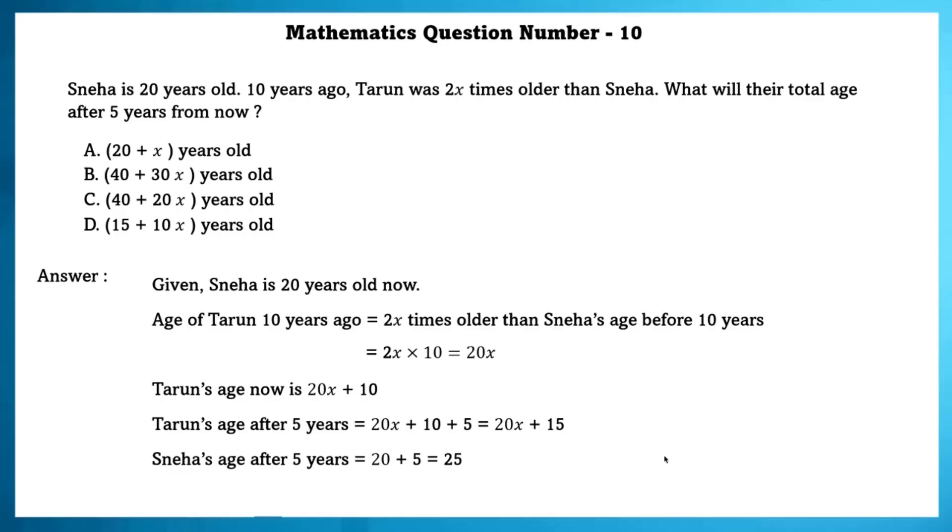Tarun's age after 5 years is equal to 20x plus 10 plus 5 which can be written as 20x plus 15. Sneha's age after 5 years is equal to 20 plus 5 which is equal to 25 years. Sum of their age after 5 years is equal to 20x plus 15 plus 25 which is equal to 20x plus 40 years old.